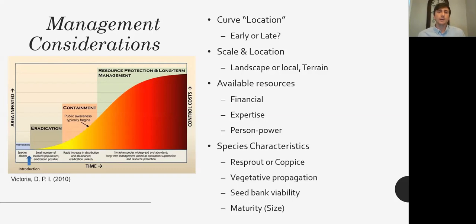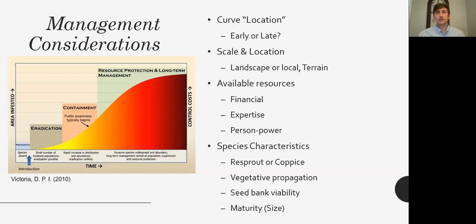One consideration is where we are in the curve — is it the first time anyone's noticed this exotic, or is it a whole 20-acre dense occurrence? Related to this is scale and location: are we talking about a small single field along the visitor center, or the whole southwestern unit of the Chickamauga battlefield? We also have to consider terrain — a nice flat accessible area versus a steep slope or embankment. These factors all play into what management methods we can actually use.